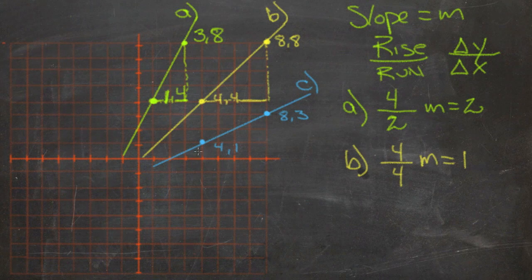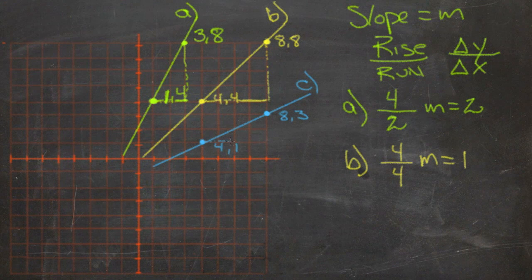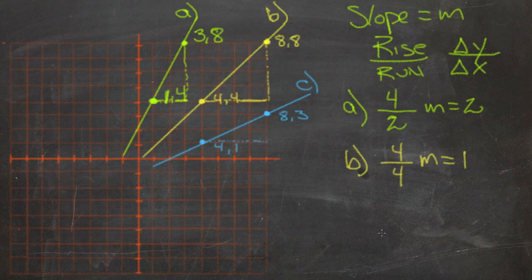And then our last line, c, we're going from the point 4, 1 to the point 8, 3. So our change in x, our run, is going to be 4.